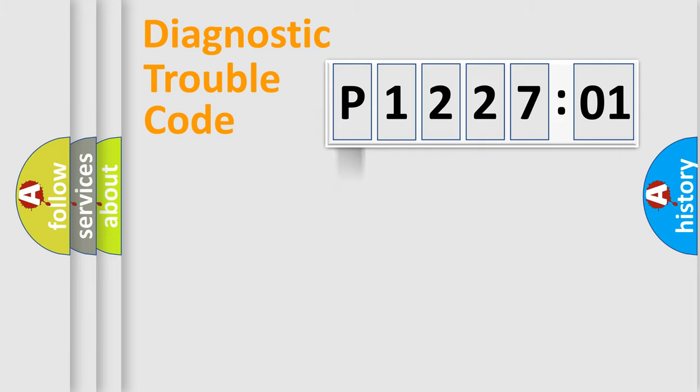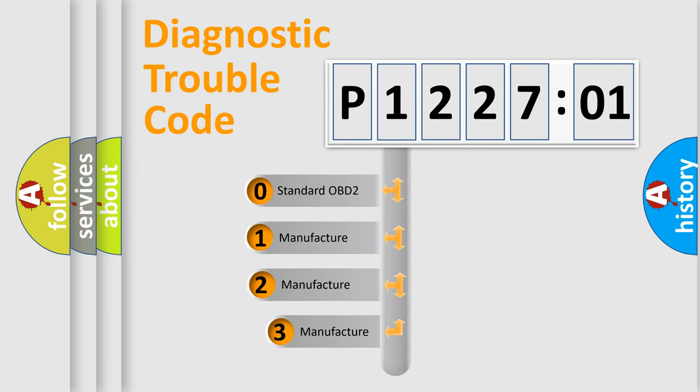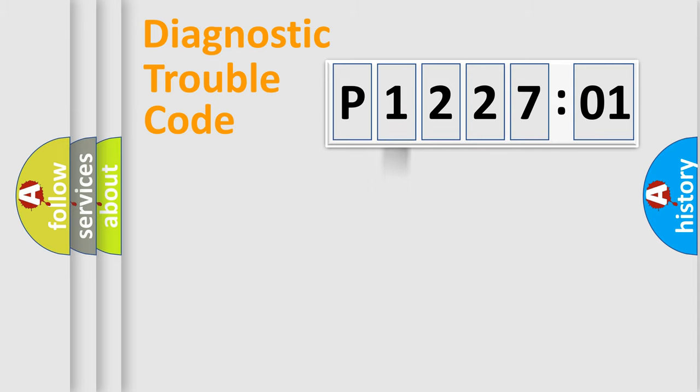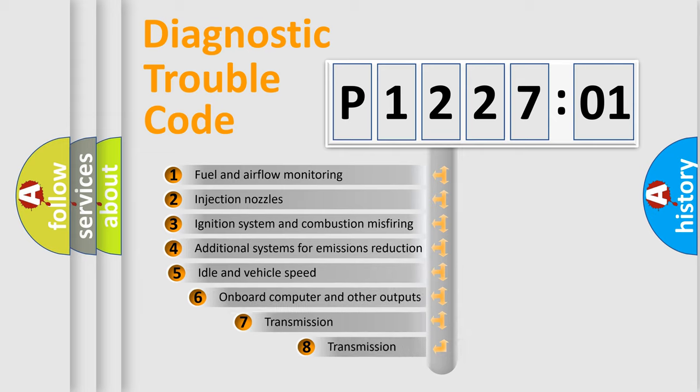Powertrain, Body, Chassis, Network. This distribution is defined in the first character code. If the second character is expressed as zero, it is a standardized error. In the case of numbers 1, 2, 3, it is a more specific expression of the car-specific error.